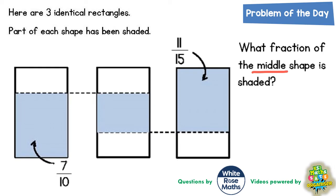On the left-hand rectangle that's seven tenths, and on the right-hand rectangle that's eleven fifteenths. Any question where we've got fractions with different denominators normally involves us changing those fractions into equivalent fractions with the same denominator — in other words, a common denominator. So we need to find a common denominator for ten and fifteen.